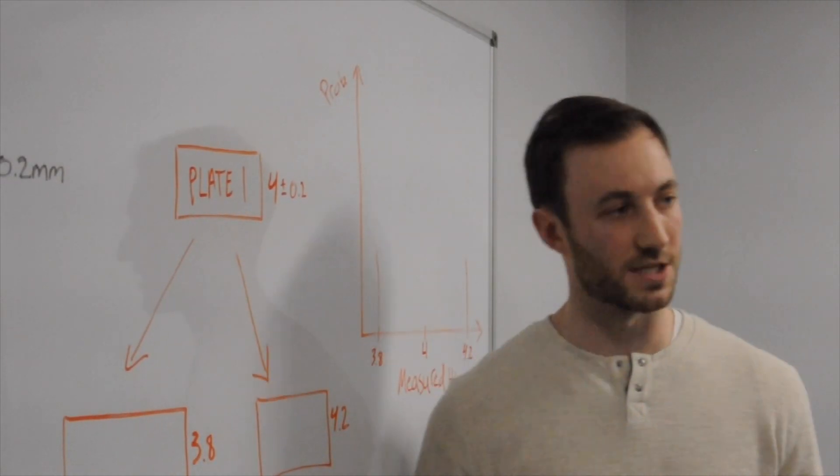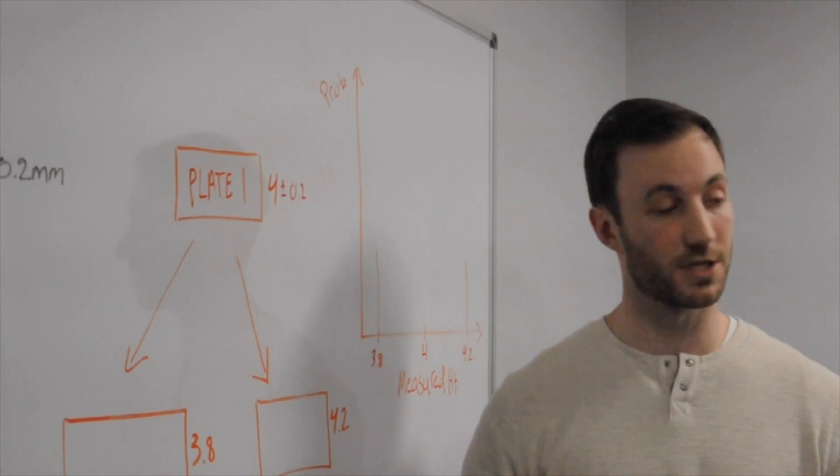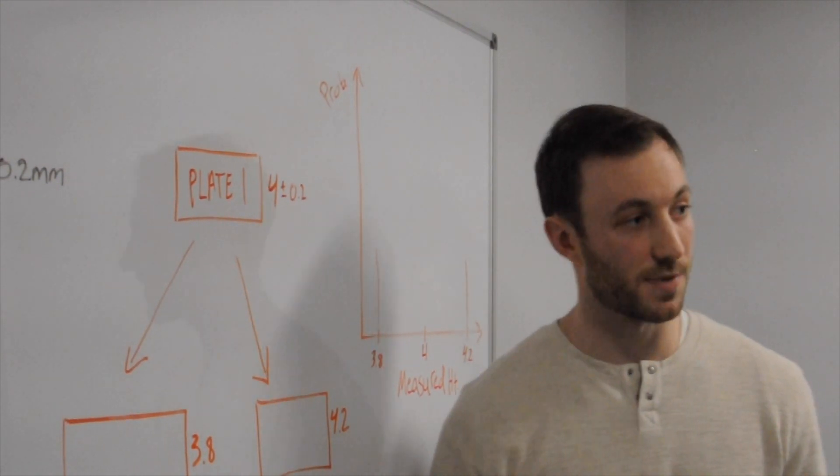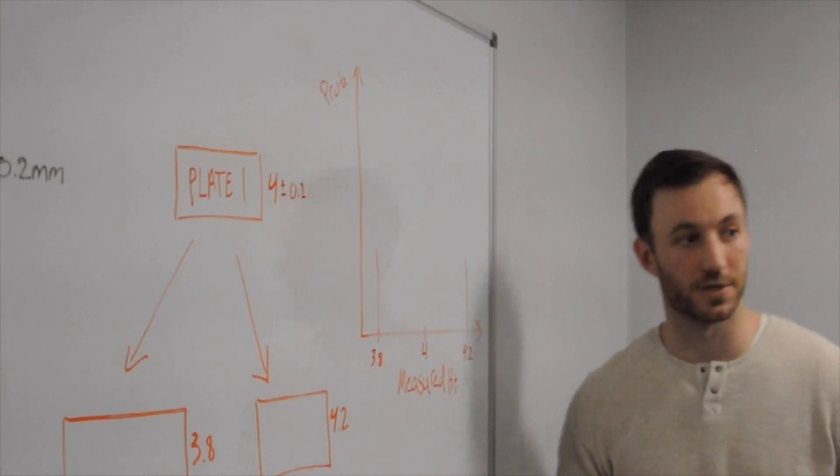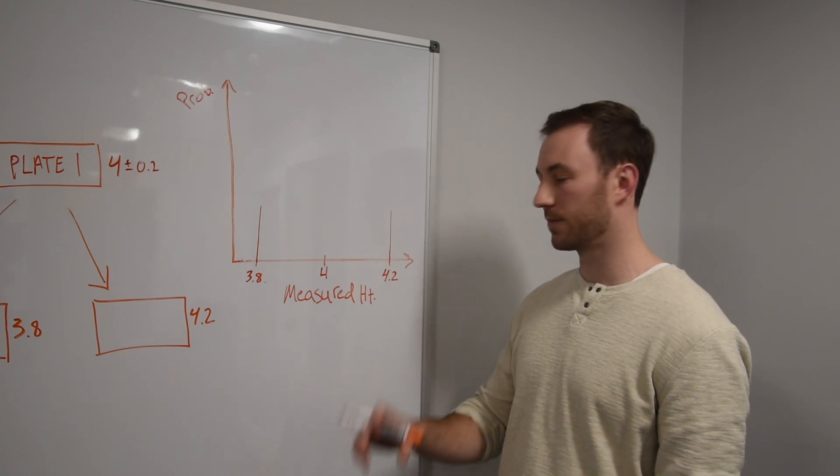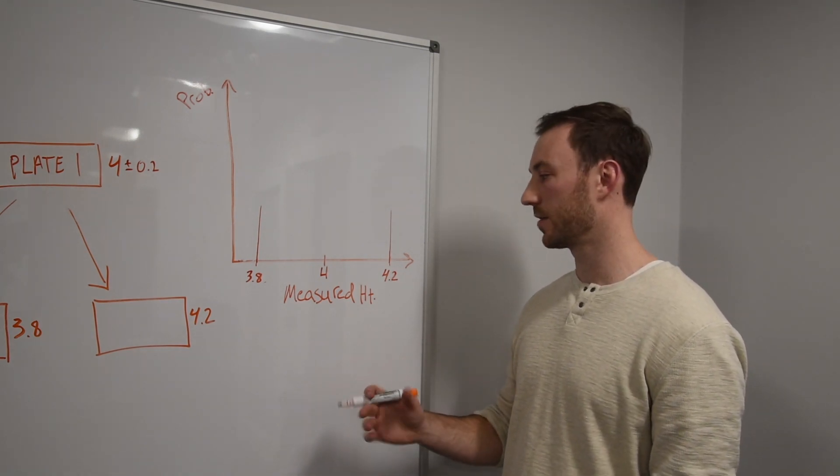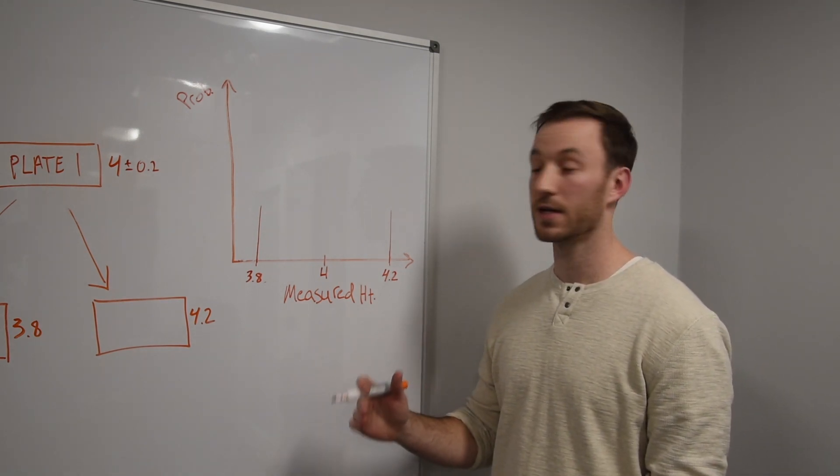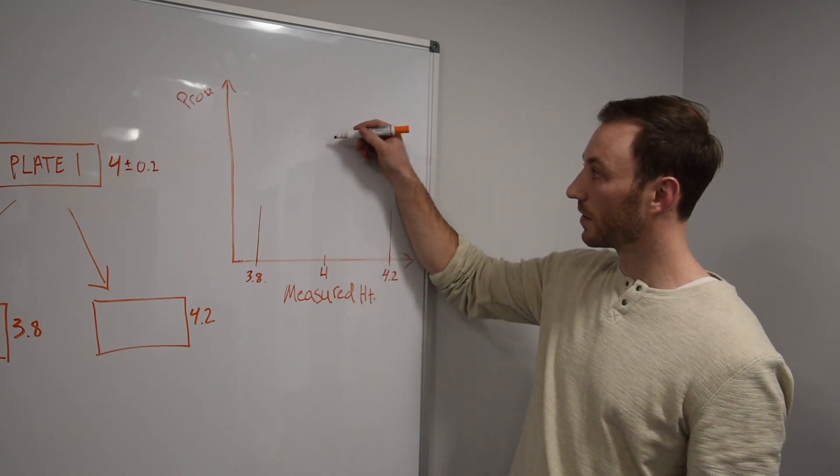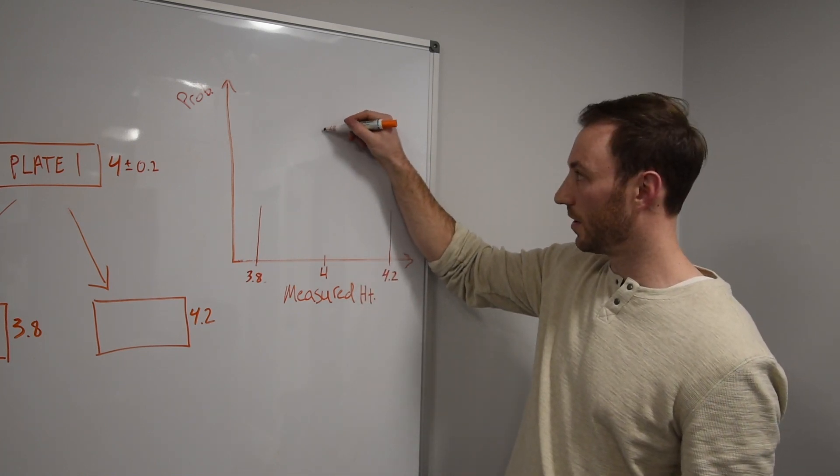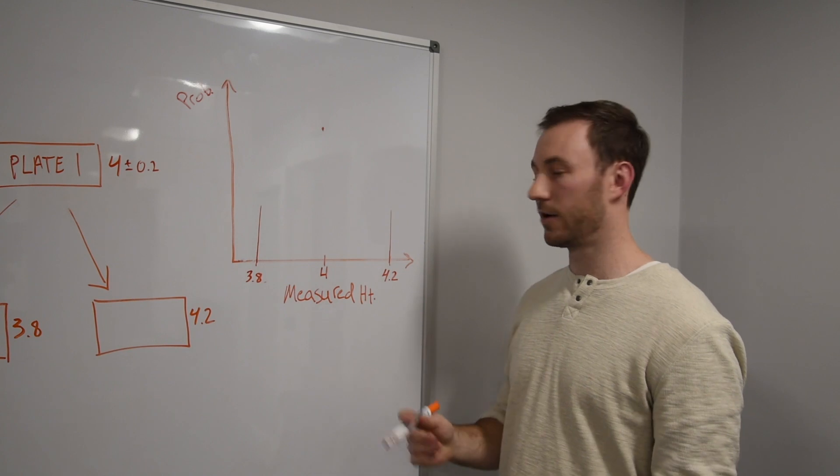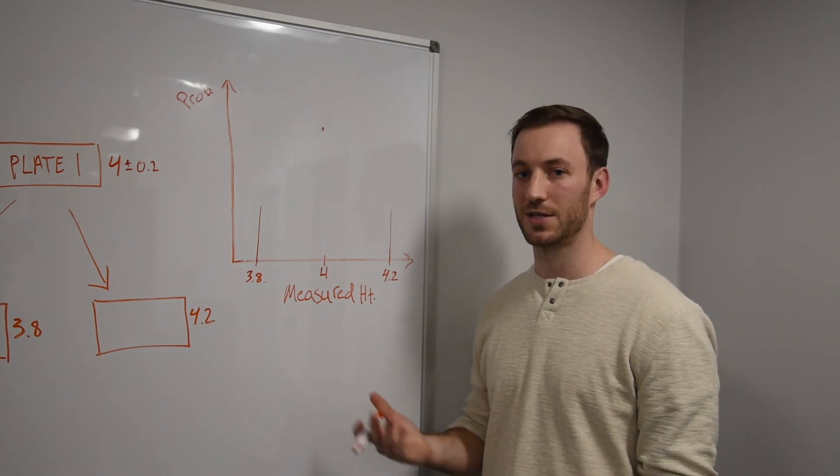If we took this bag of a hundred plates and start measuring the heights, we could expect to see something similar to here. So we reach in on the first, take a measurement, and notice this plate is exactly four millimeters. The likelihood of that happening is actually pretty high because the machine is using a high precision, high accuracy CNC machine.